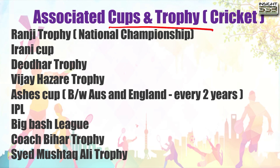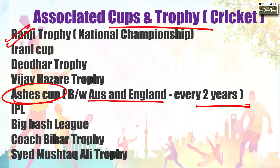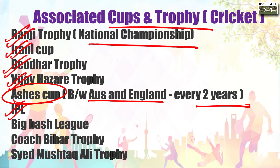Now associated cups and trophies - the most important ones. The Ashes is between Australia and England and is played every 2 years. Ranji Trophy is our country's national championship - very important. Other important trophies: Irani Cup, Deodhar Trophy, Vijay Hazare Trophy, IPL, Big Bash League, Koch Bihar Trophy, and Syed Mushtaq Ali Trophy - all these trophies are associated with cricket. Please read them once or twice.